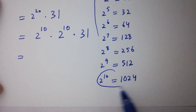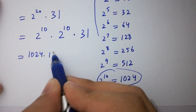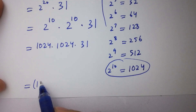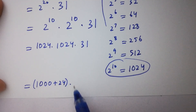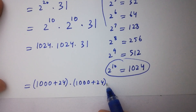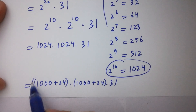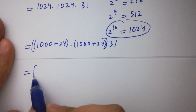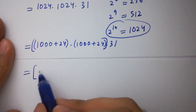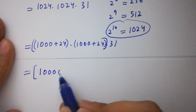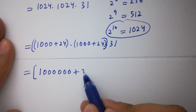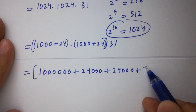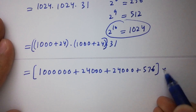So here 2 to the power 10 will be 1024 times 1024 times 31, which is the same as (1000 plus 24) times (1000 plus 24) times 31. By multiplication, we have 1000 times 1000 — that gives 1 followed by 6 zeros — plus 24 times 1000 which is 24,000, plus another 24 times 1000 which is 24,000, plus 24 times 24 which is 576, and all times 31.